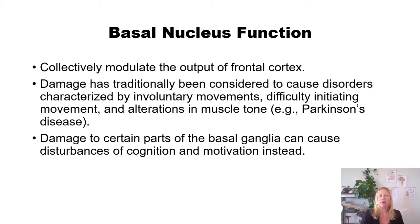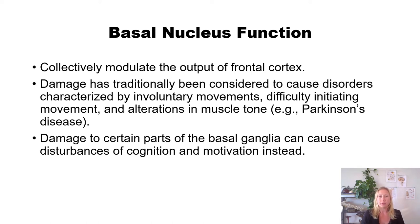Collectively, the basal nucleus modulates output of the frontal cortex — think the precentral gyrus and the motor areas in front of it — for fine motor control and regulating movements. Damage has traditionally been considered to cause disorders characterized by involuntary movements and difficulty initiating movements. However, damage to certain parts can also cause disturbances of cognition and motivation, tied to what's happening in the frontal cortex and frontal lobe.